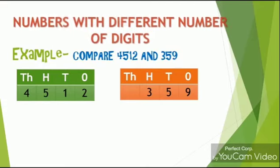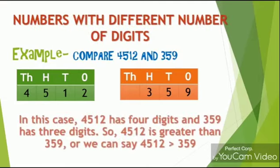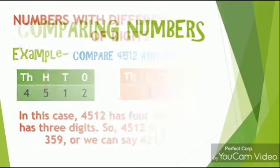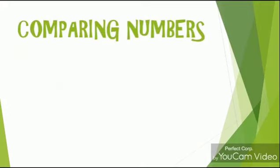Let's compare 4512 and 359. The very first thing we can see clearly is that the first number has four digits while the other number has three digits. So the number with the greater number of digits is the greater one. We can say 4512 is greater than 359.